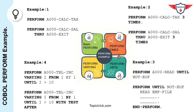The second example is PERFORM with the TIMES phrase. Here you have a PERFORM statement followed by a paragraph name and then the number of times you want to execute that paragraph. In this example, A-000-CALC-TAX will be executed three times. Similarly, if you want to execute a set of paragraphs within a section, you can use PERFORM followed by a paragraph name, then THROUGH followed by another paragraph name, and then the number of times you want to execute that piece of logic.